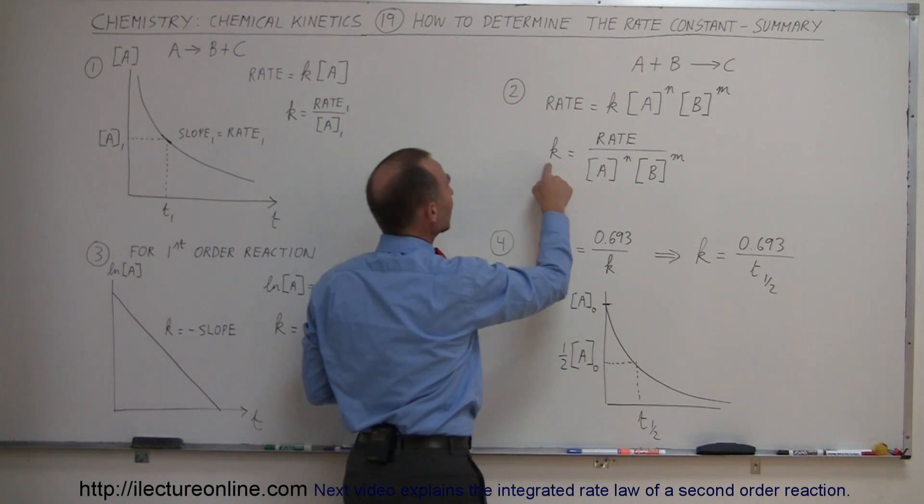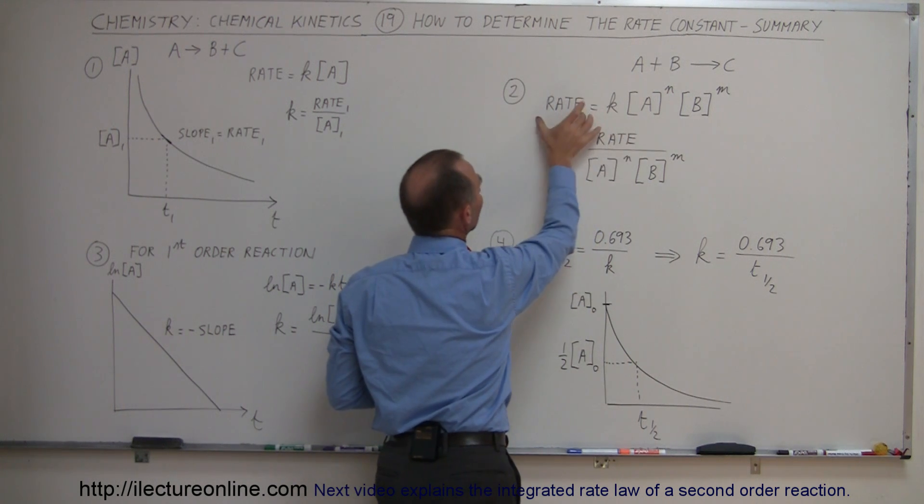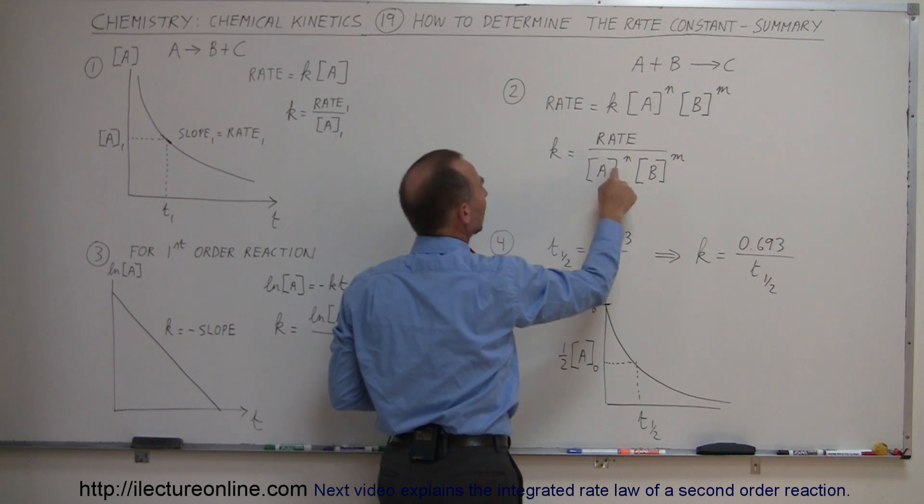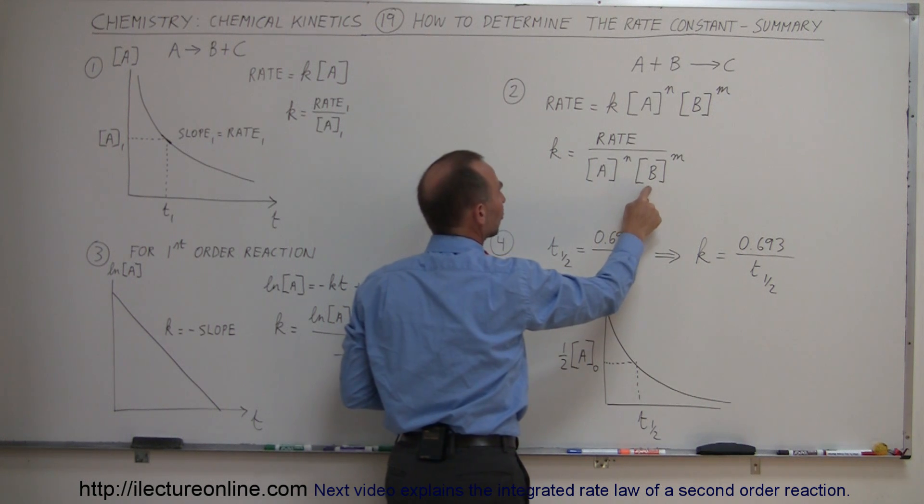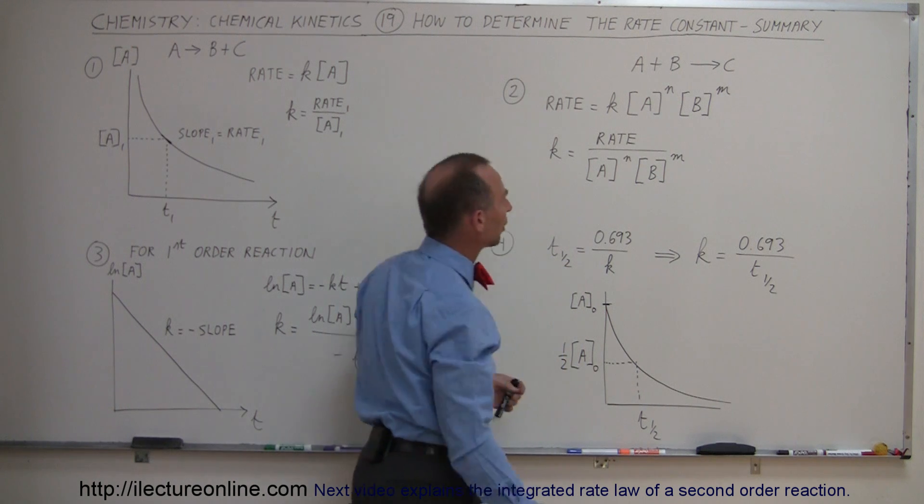And then of course the K, the constant is equal to the rate of the reaction at that time, divided by the concentration of A raised to the N order, and the concentration of B raised to the M order.